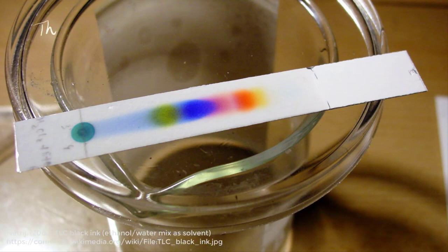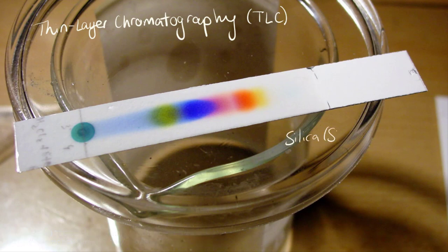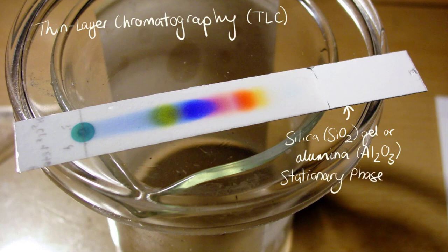First up is thin layer chromatography, or TLC. TLC uses a thin layer of silica gel or alumina as the stationary phase, which is bonded to a glass slide. Just like in paper chromatography, the analyte is dotted onto the slide and the mobile phase can be almost any liquid solvent we choose.